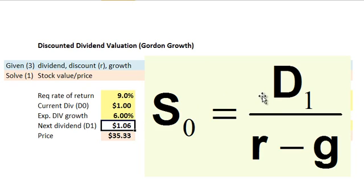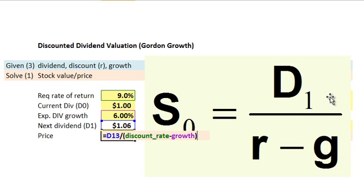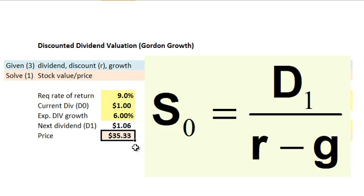Now I can apply the Gordon Growth Model and compute the price. In the numerator I have D1, which is $1.06 — that's the next dividend, not the current dividend — divided by the discount rate R of 9% minus the expected dividend growth G of 6%. Our assumption is that this dividend of $1 today, growing to $1.06 at the end of the year, will continue to grow at 6% in an infinite series. That's the unrealistic assumption. Having done that, I compute a stock price of $35.33.